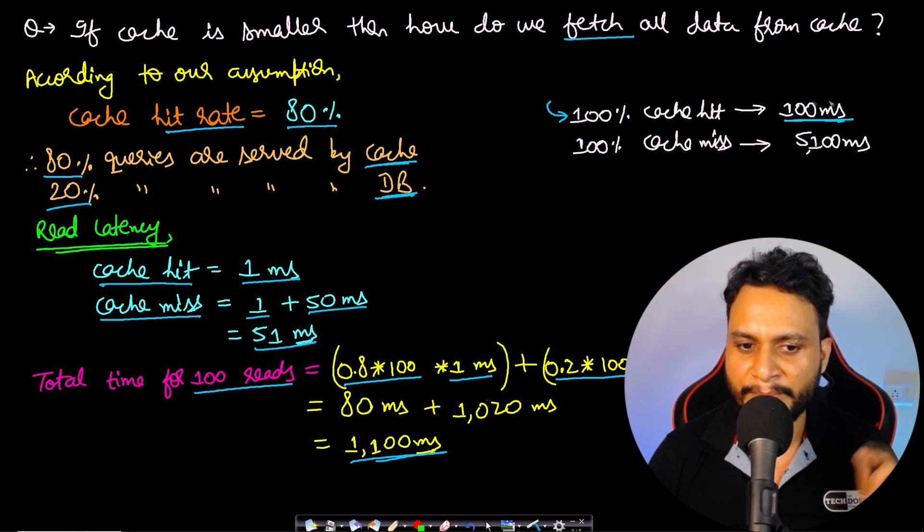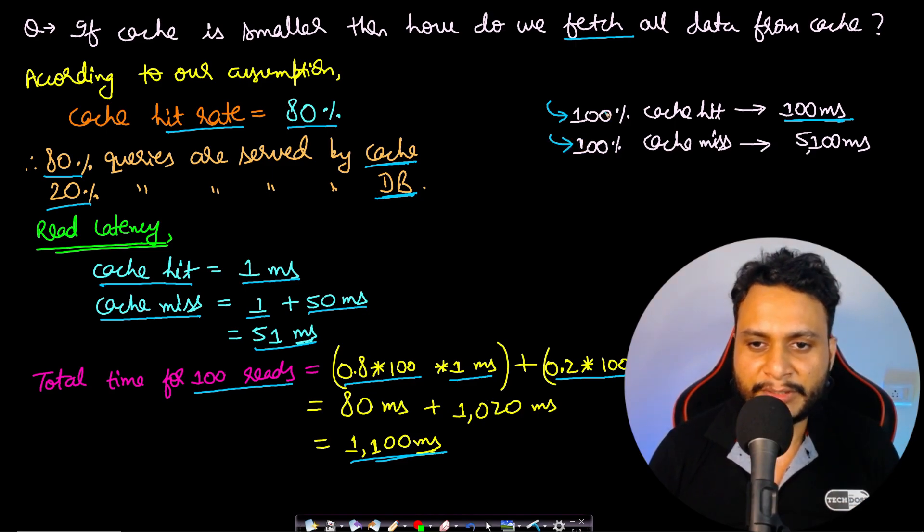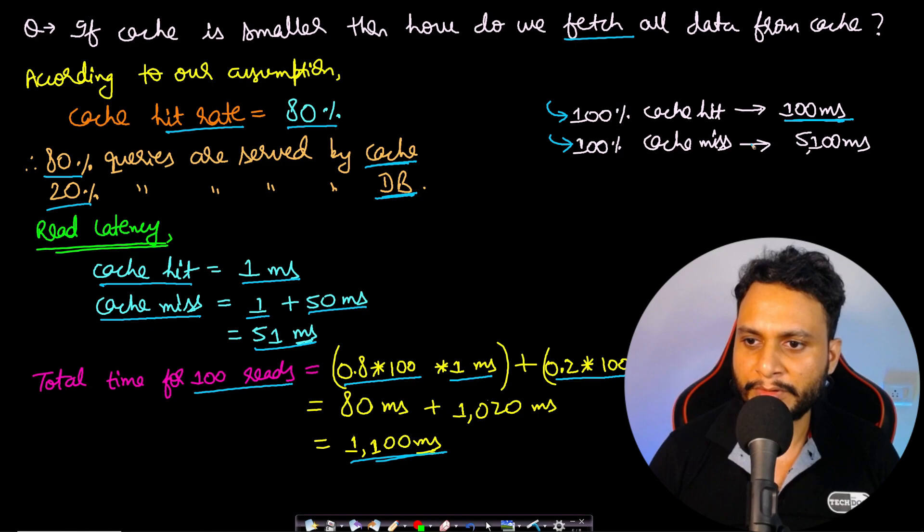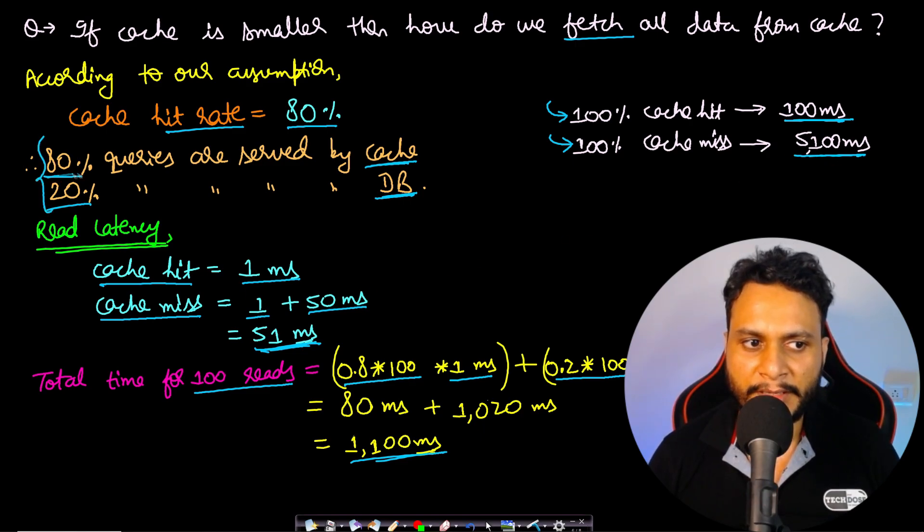If you compare with the other extreme scenario, that is if all the queries were actually hitting the database and nothing was present in the cache, in that kind of scenario you will be reading everything from the database, that is 51 ms per read, and that will be 5100 ms in total. So if 80% is our cache hit, then we are at 1100 ms, which is five times better as compared to if we do not use a cache.